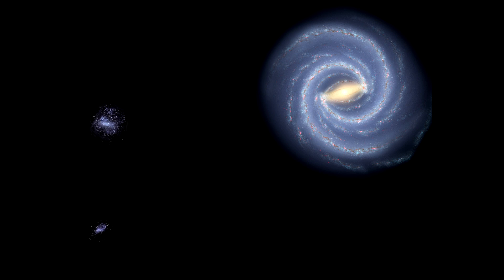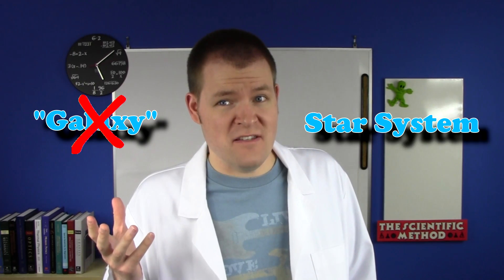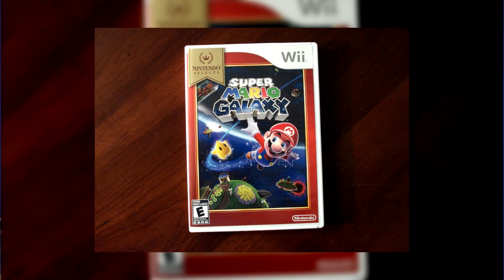You can even have smaller galaxies orbiting larger ones. We have two major orbiters called the Large and Small Magellanic Clouds. Unfortunately, when an average person says galaxy, they're probably talking about a star system. Even Nintendo messed this up calling one of their games Mario Galaxy. But then I guess Mario's star system wouldn't have sounded as cool. Anyway, stop saying it wrong!